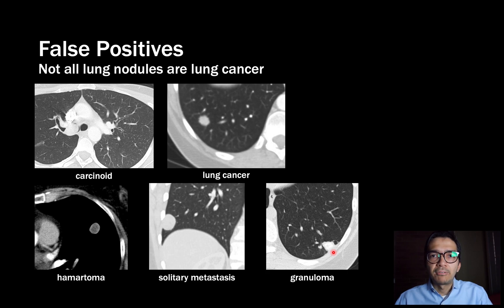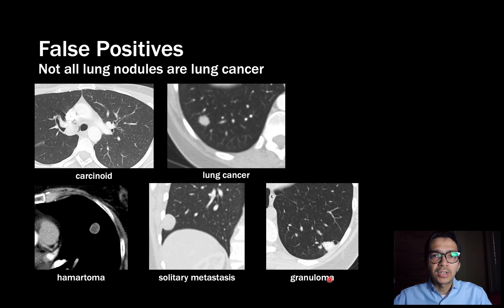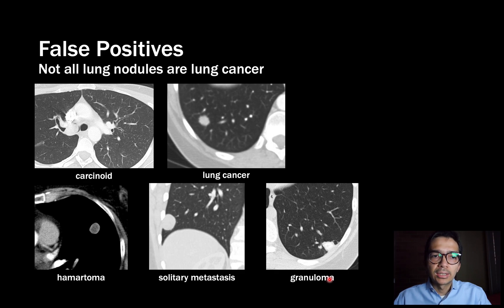Sometimes a PET scan isn't sufficient to differentiate a benign from a malignant lesion, so a biopsy — a sampling of tissue from the nodule — may be needed. The risk of a false positive is that we see something suspicious, you get a biopsy, and you get a complication from that biopsy even though you didn't have cancer. However, in the National Lung Screening Trial, most false positives were resolved with just a follow-up study, and fewer than 1% of patients had a major complication from biopsy or surgery. The actual risk of complications from false positives is very low.